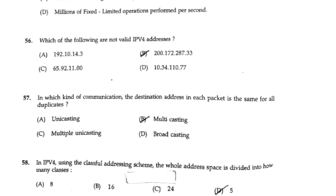In IPv4, using the classful addressing scheme, the whole address space is divided into how many classes? The answer is 5.